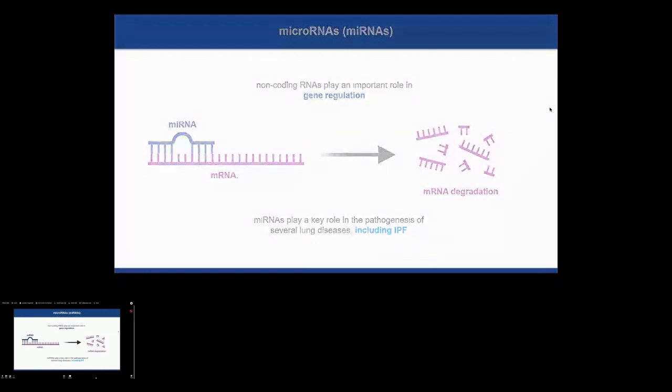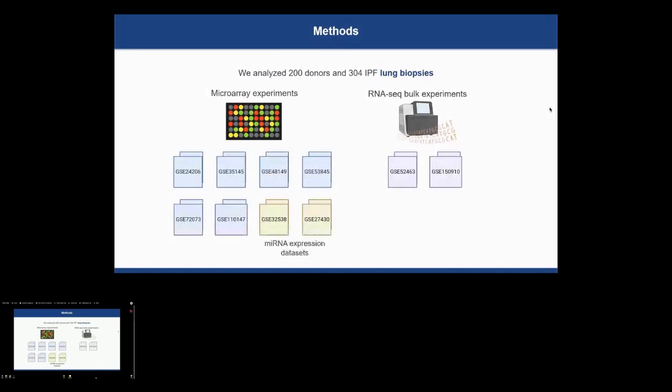We decided to search and analyze the experiments stored in the Gene Expression Omnibus database of IPF lung biopsies and donors. We included eight microarray experiments and two RNA-seq experiments in our analysis. We also used two microRNA expression microarrays to evaluate expression in downstream microRNA predictions, including a total of 304 IPF samples and 200 donor samples.